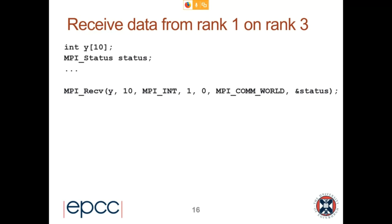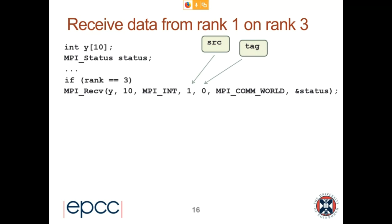Here we can look at receiving data from rank 1 on rank 3. We've highlighted source and tag both as zero — that's fine. We've created an MPI_Status, we're receiving into buffer y which has been created large enough for 10 integers, from rank 1, tag 0. We need that 'if rank equals 3' check to make sure our code doesn't deadlock, because MPI_Recv is another blocking function — if a process posts MPI_Recv and never receives the expected message, it will just keep waiting forever.